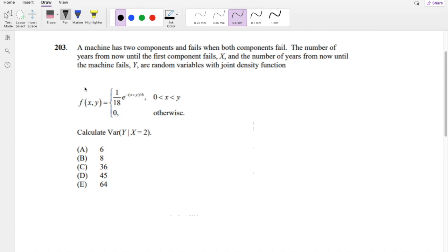Basically they give you a joint distribution function right here and they're asking you to calculate the variance, the conditional variance of y given x equals 2. First of all, let's see what the range is because it says x is less than y. So this is the x equals y line. Let's pick a random point, say this is like 1, 0. Is 1 less than 0? Nope. So then this area right here is this whole part right here. Everywhere else is 0, so we don't have to worry about the other parts.